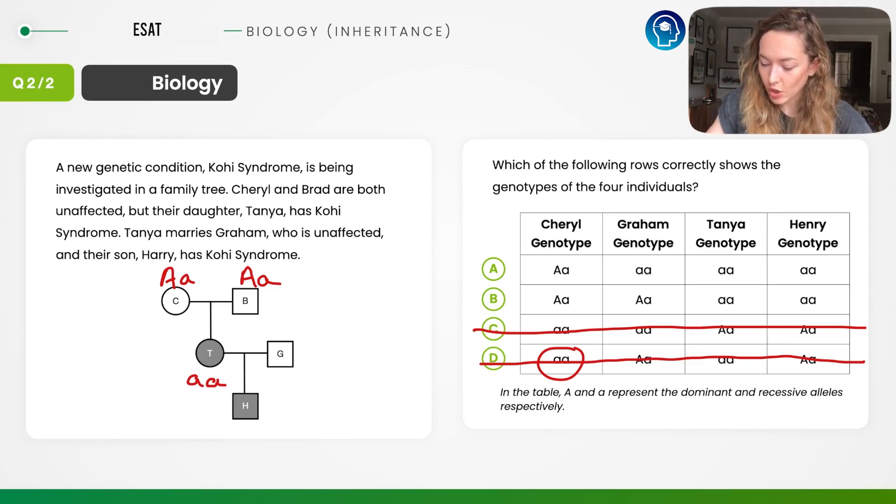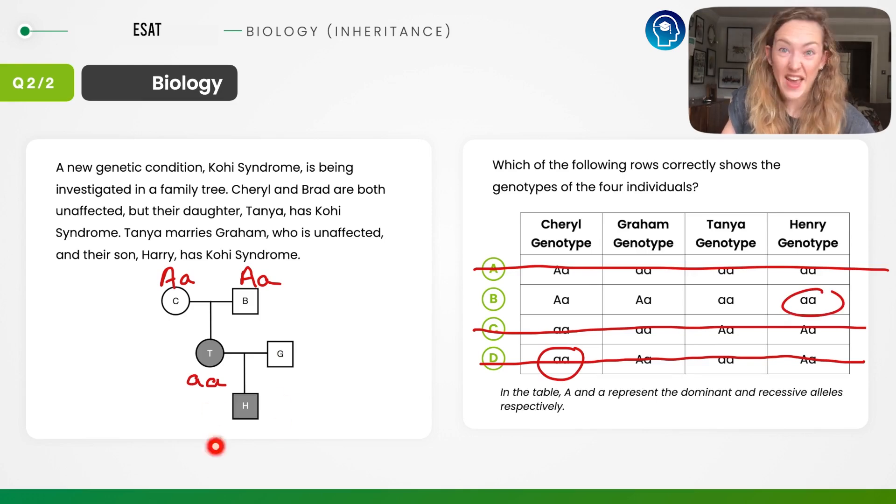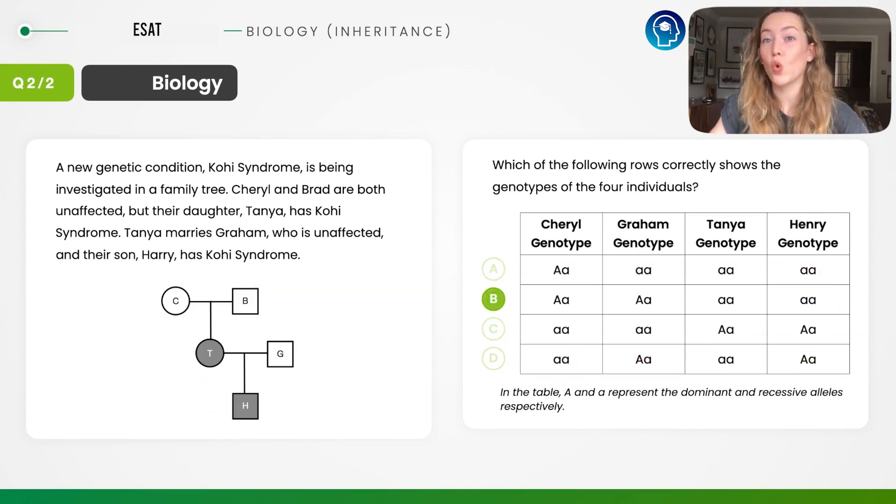Finally, let's have a look at Graham. So we've been told that Graham is unaffected. Okay, so that means he's either capital A dominant homozygous or hetero, and in this particular case we don't have an option to have capital A capital A. We've only got a situation where he's affected, which he's not, or where he's a carrier. So therefore we know that the answer must be B. For completeness, we also know that Henry must be lowercase a lowercase a, homozygous recessive, because he is affected. Okay, so the answer here is of course B.